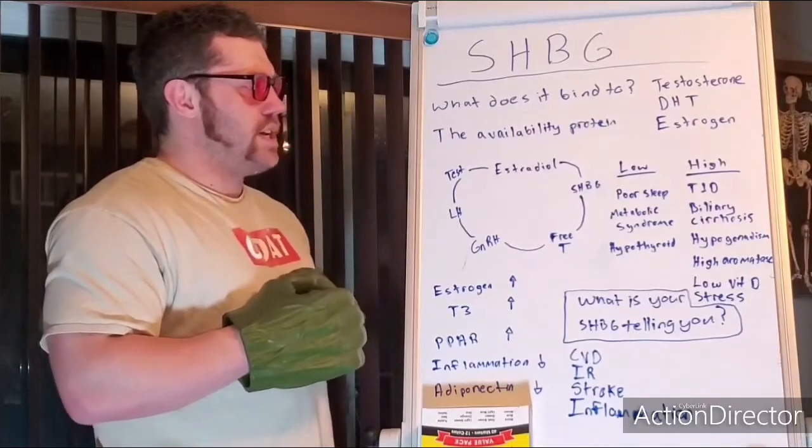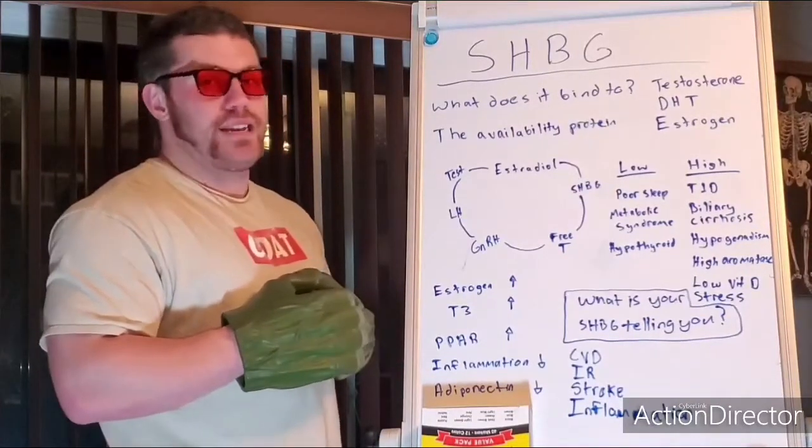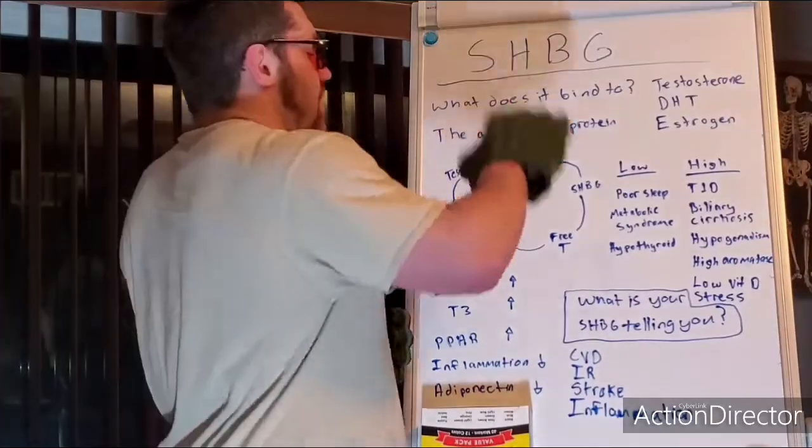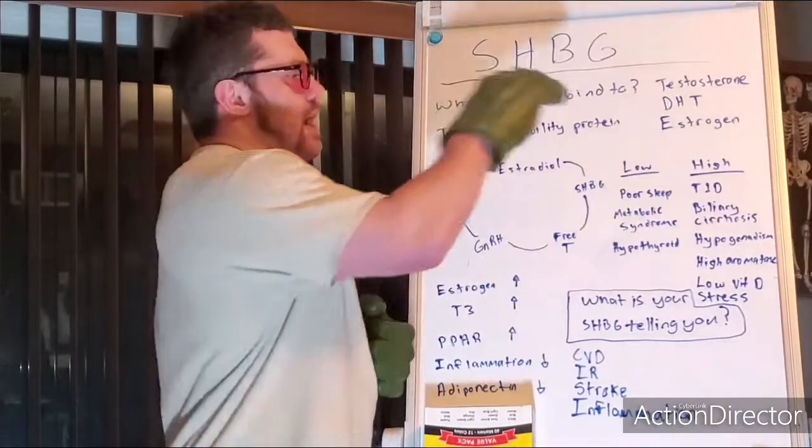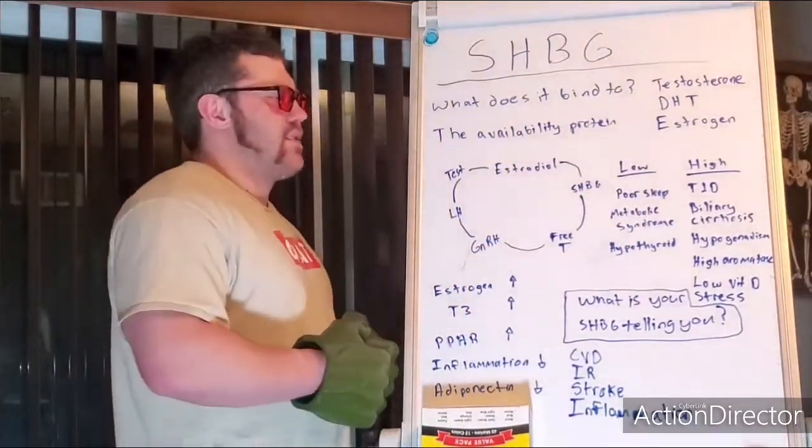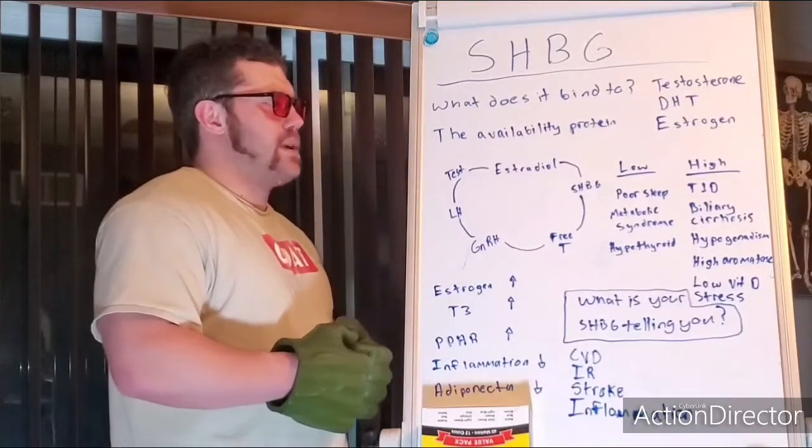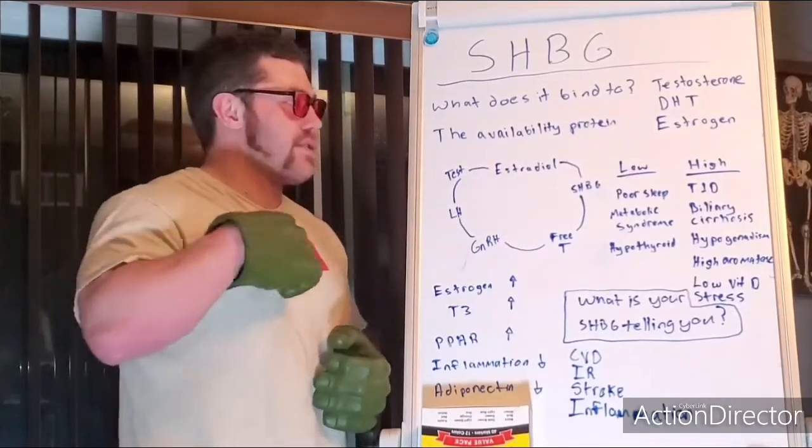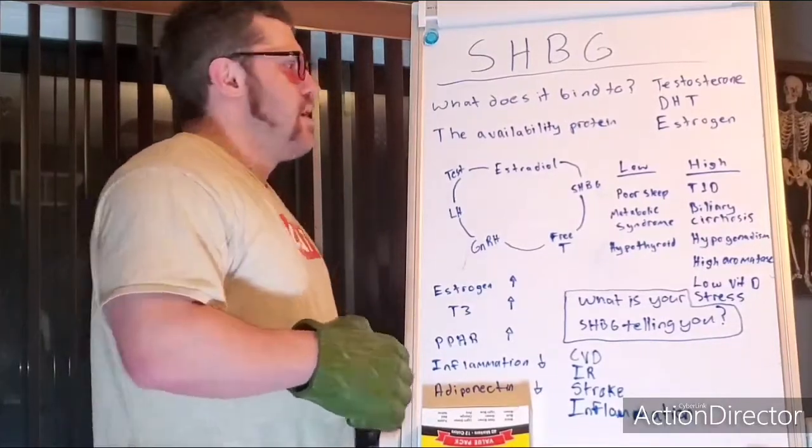So you will see that correlation. And there are more we'll talk about. But high SHBG: T1D, so Type 1 diabetes. Obviously Type 1 diabetes is a failure to produce insulin from the pancreas, so a little bit different.